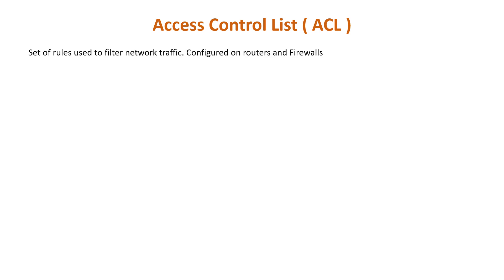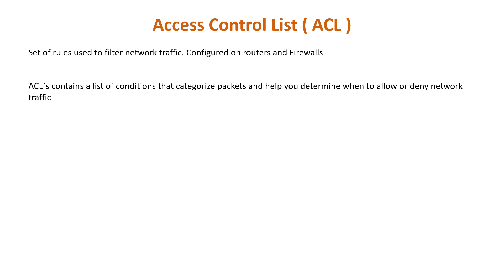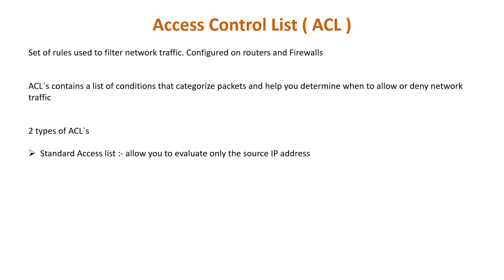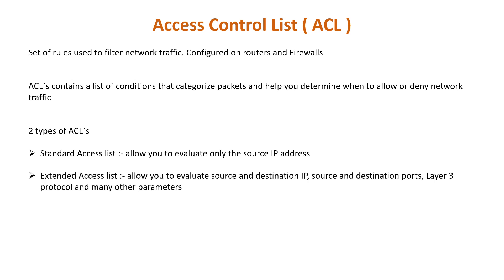An access control list, or ACL, is a set of rules used to filter network traffic. ACLs can be configured on network devices with packet filtering capabilities such as routers and firewalls. ACLs contain a list of conditions that categorize packets and help you determine when to allow or deny network traffic. They are applied on an interface basis to packets leaving or entering an interface. There are two types of ACL on Cisco devices: standard access lists, which evaluate only the source IP address of a packet and are less CPU intensive; and extended access lists, which evaluate source and destination IP, the Layer 3 protocol type, source and destination port, and other parameters, but require more CPU time and allow a more granular level of control.